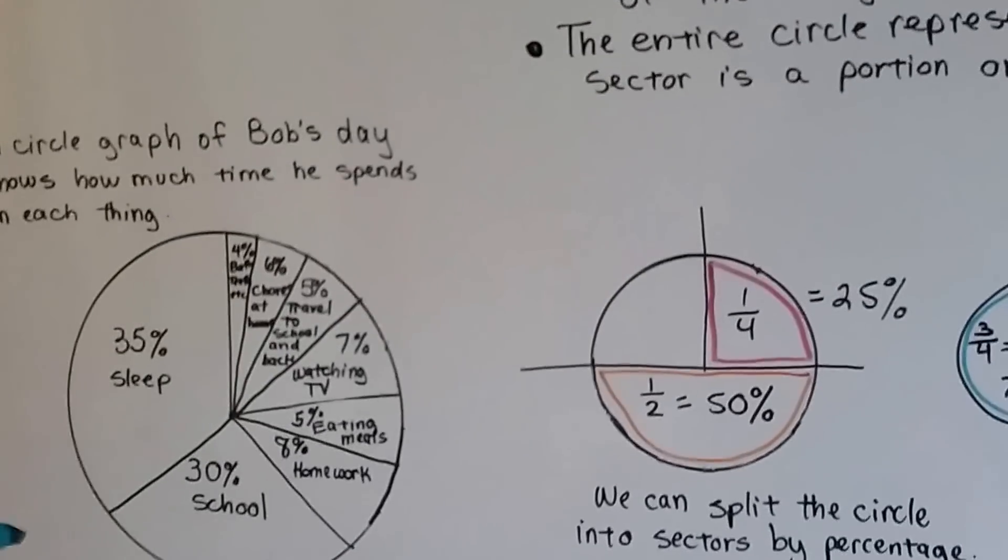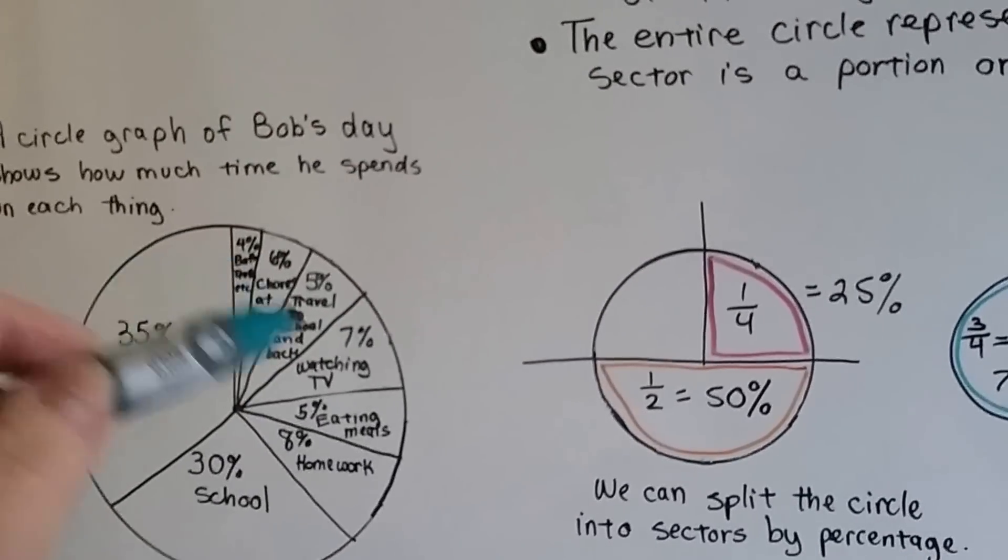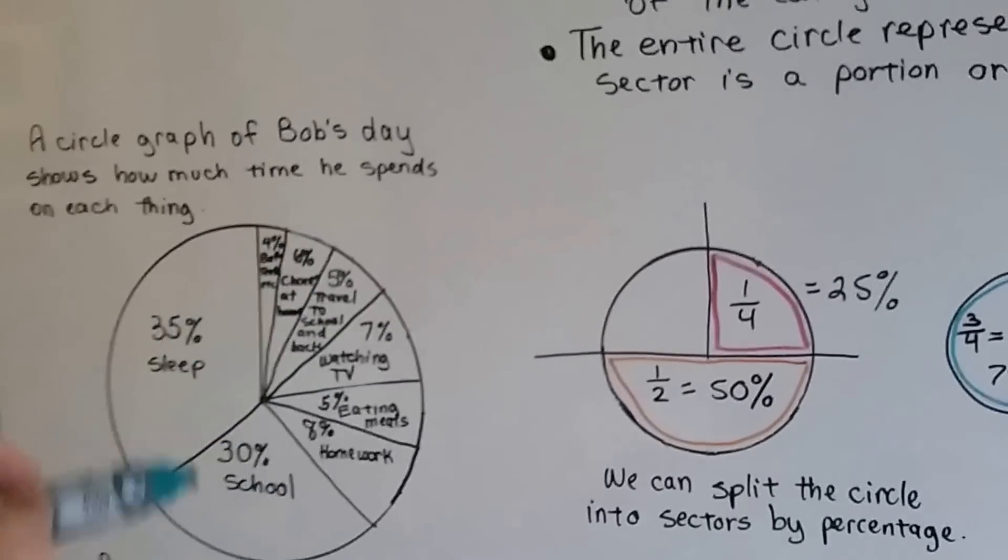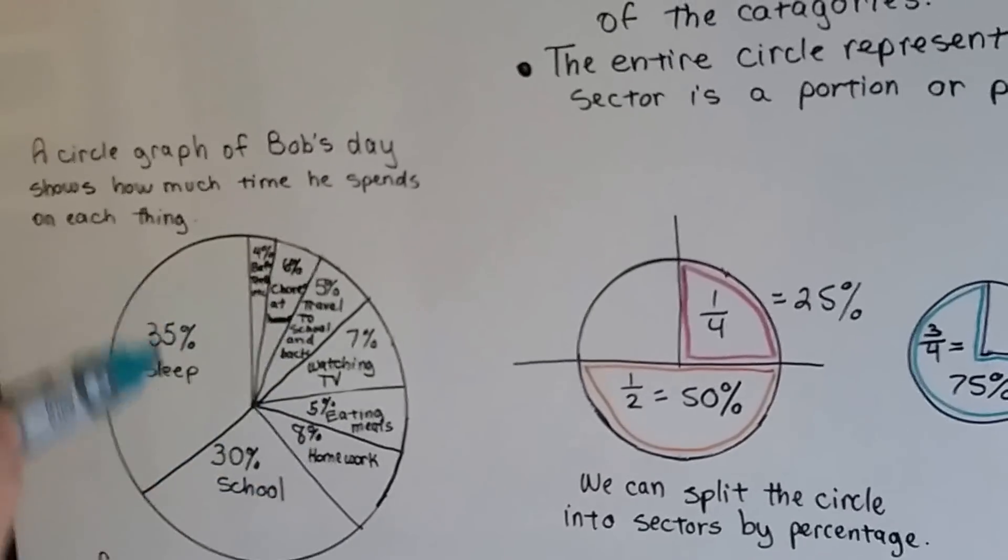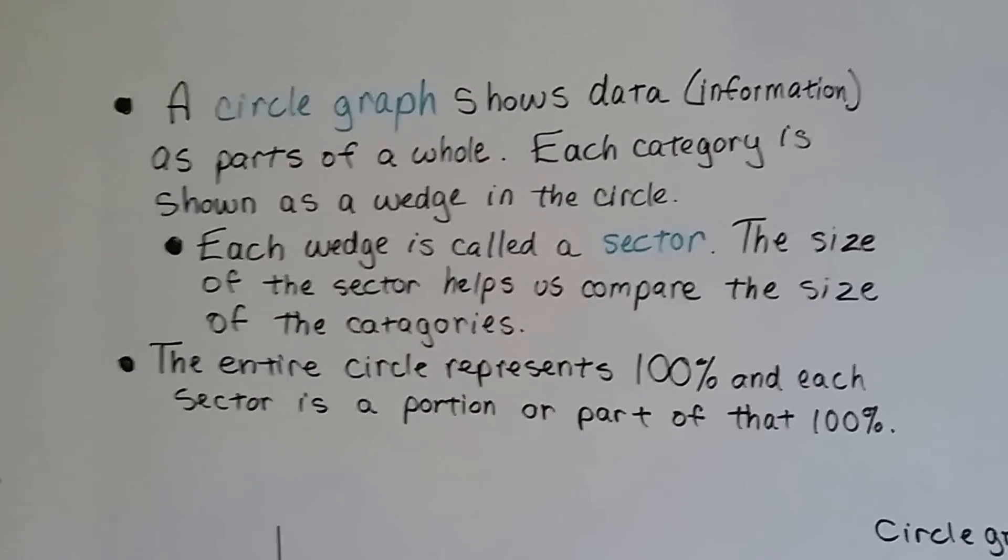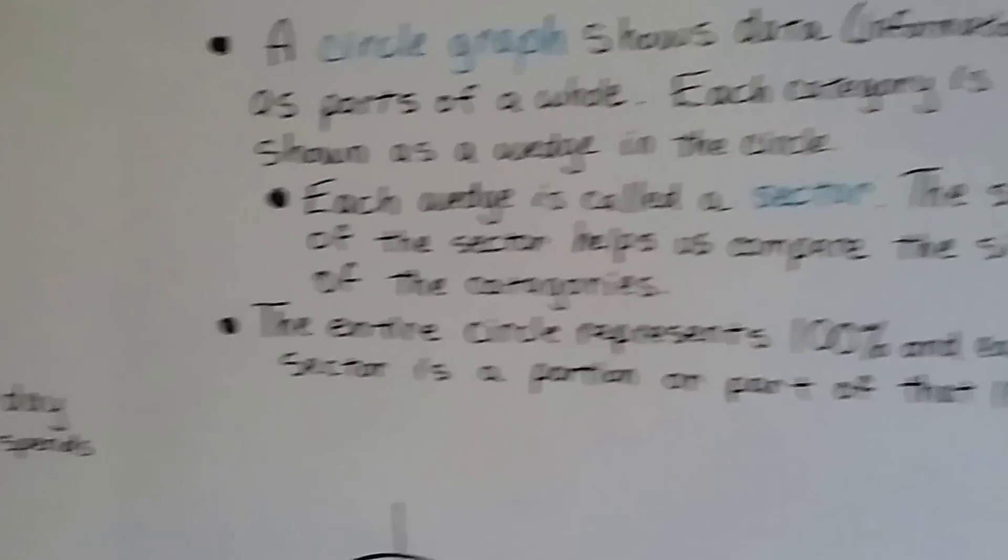Here's a pie graph, or circle graph, right here. And you can see all the wedges. Don't they look like slices of pie? Depending on the size of each sector, you know the percentage of the circle. The entire circle represents 100%, and each sector is a portion or part of that 100%.